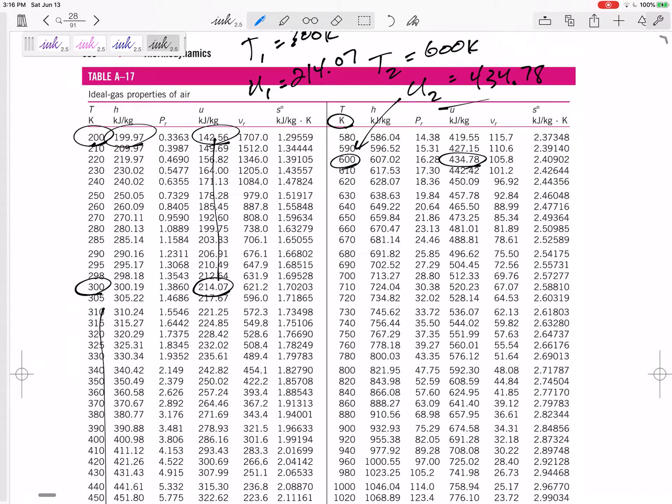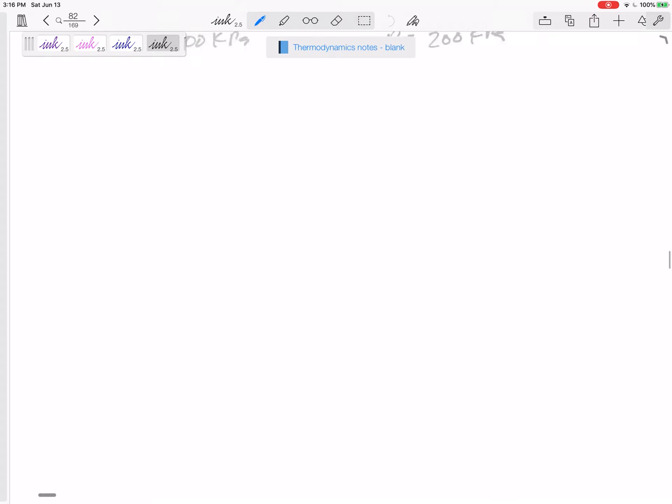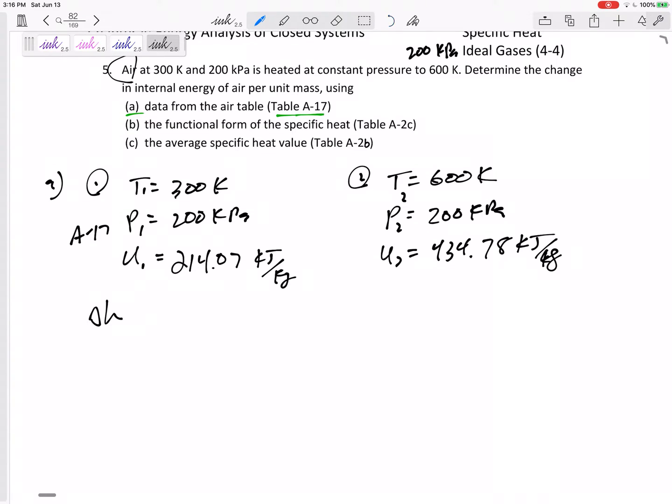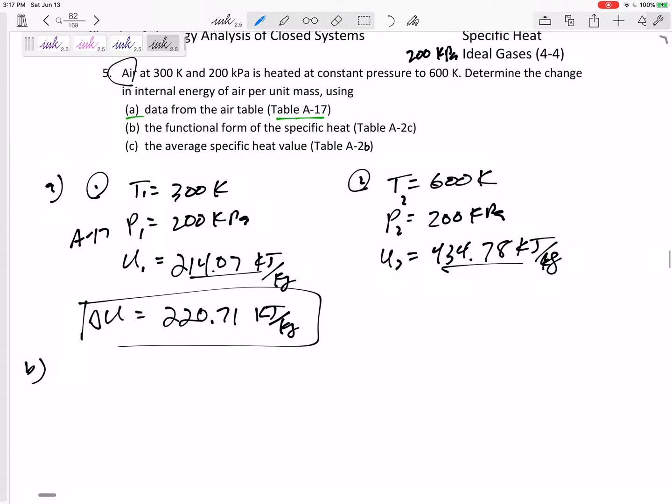T1 was 300, so my U1, 300 U value, 214.07. The change in internal energy, U2 minus U1, those values right there. So from Table A17, U1 was 214.07 kilojoules per kilogram, U2 was 434.78 kilojoules per kilogram. So delta U, that minus that, 220.71 kilojoules per kilogram. That was using part A.